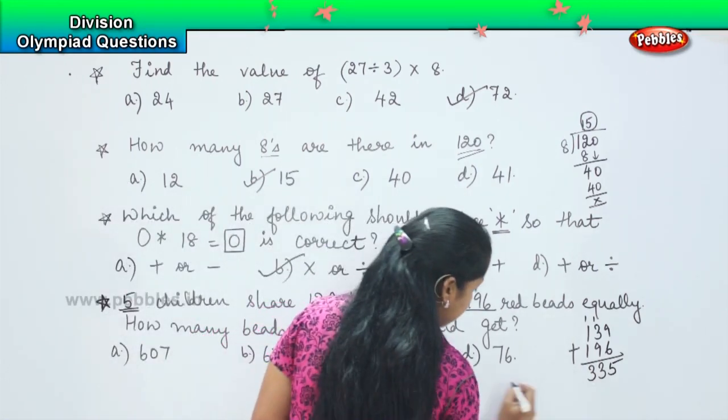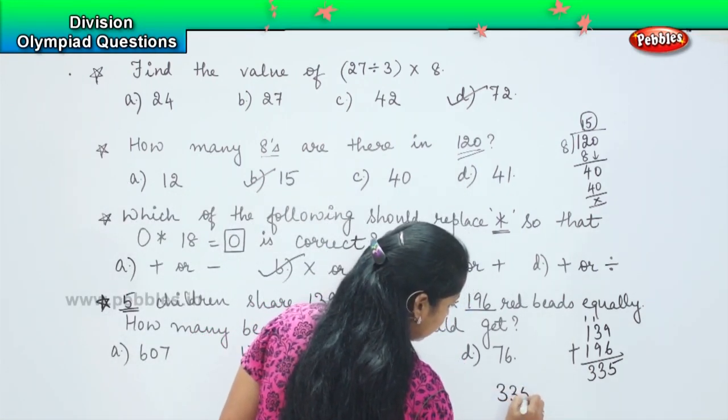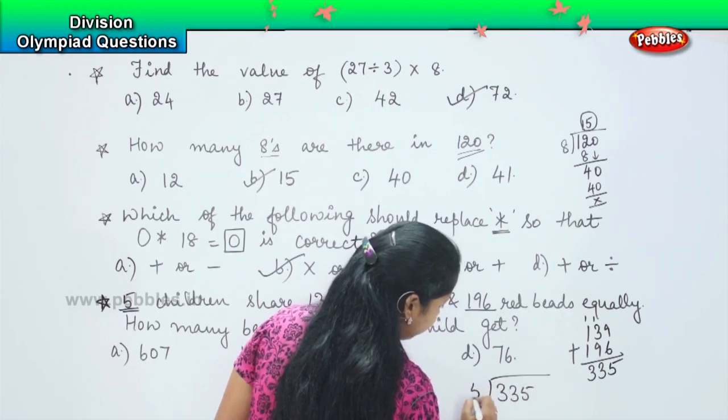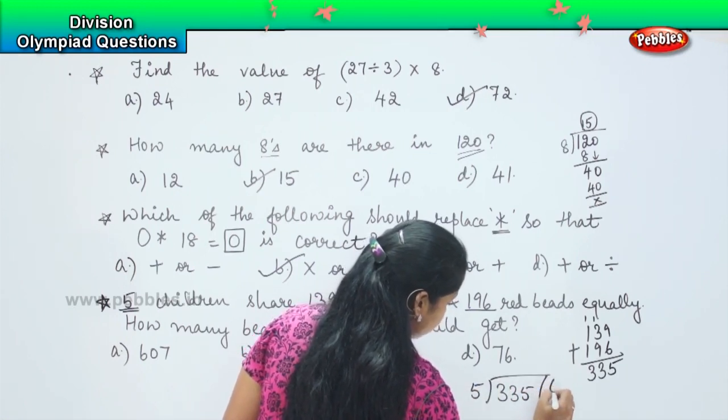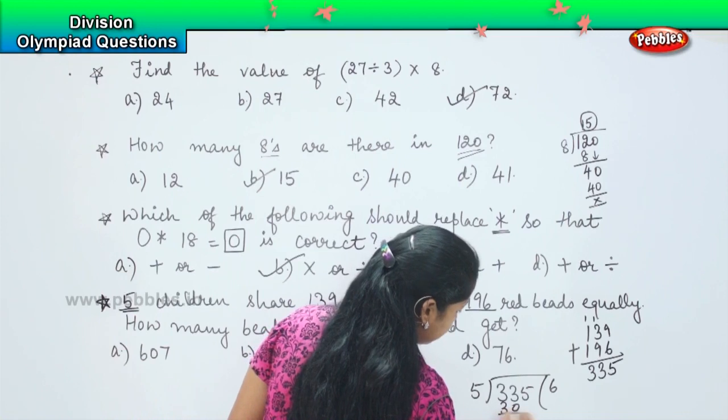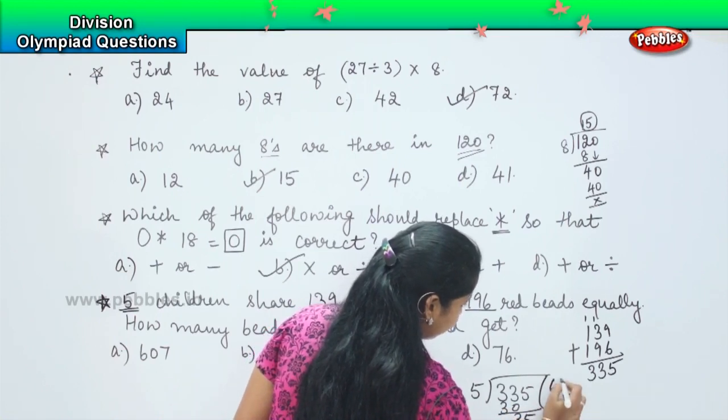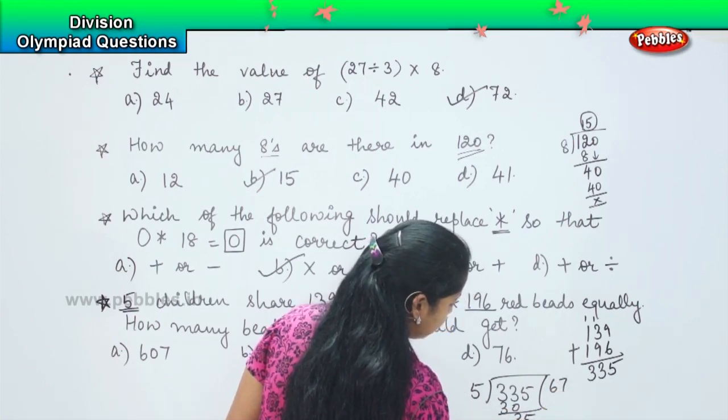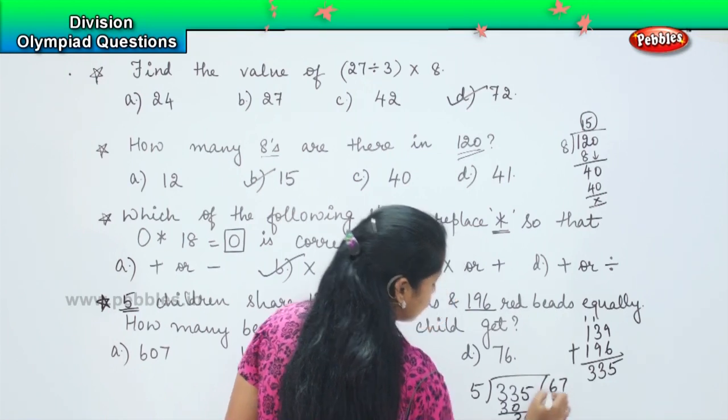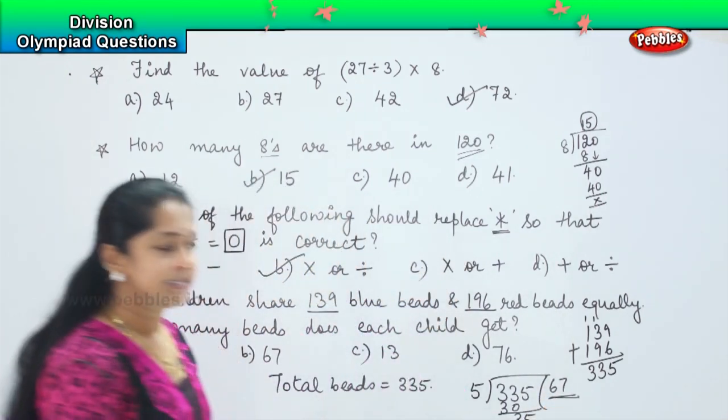So now, this 335 beads I will be dividing equally among 5 children. So 335 divided by 5. So 5, 6 are 30 and 5, 7's are 35. So which means my answer is 67.